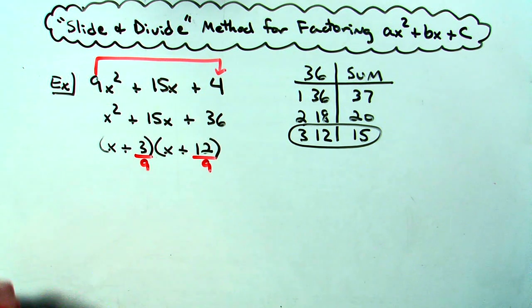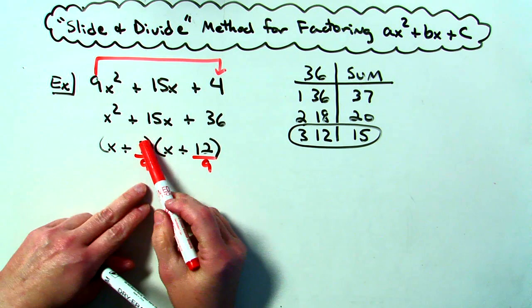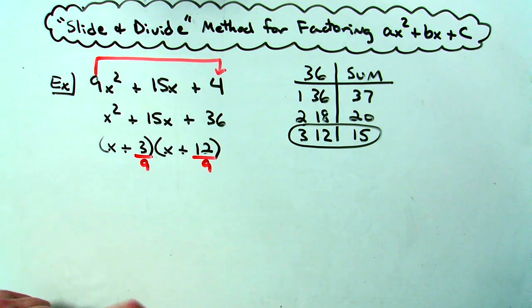When I divide by 9 and I divide by 9, now neither one of these will divide. 3 divided by 9, 12 divided by 9.